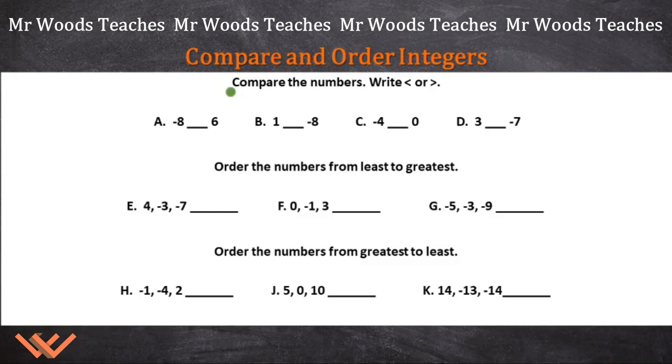Let's see what we have here. First, let's read the directions. Compare the numbers, write less than or greater than. Remember, these are inequality symbols. So let's take a look at A here. Negative 8, blank 6. Well, we know that 6 is on the right-hand side of 0, and negative 8 is on the left-hand side of 0. And 0 is less than 6, so therefore, negative 8 is less than 6.